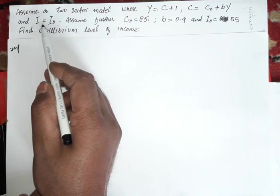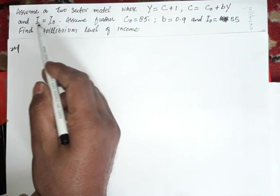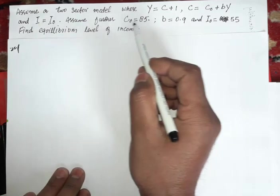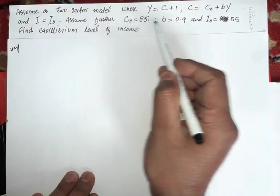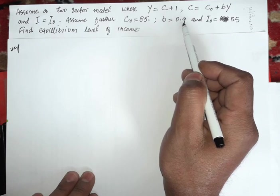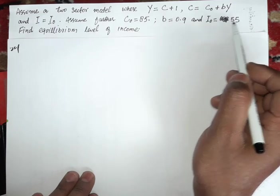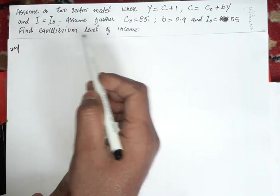And I equals I0, that is autonomous investment. The value of C0 is 85, B (MPC) is 0.9, and autonomous investment is 55. Find the equilibrium level of income.